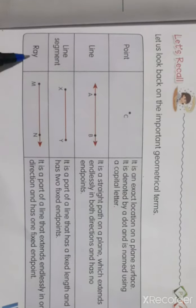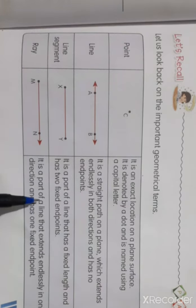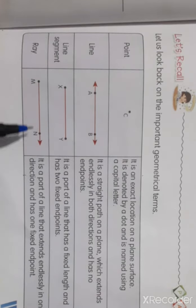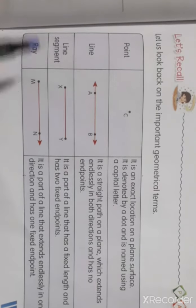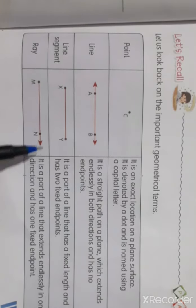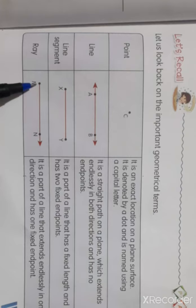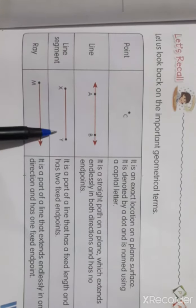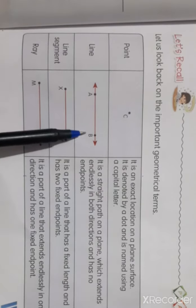Now last, ray. Ray is the one side. It is a part of the line that extends endlessly in one direction. This one side is the end point and the other direction has no end point. Starting point is the end point. Ray has one fixed end point, line segment has two fixed end points.